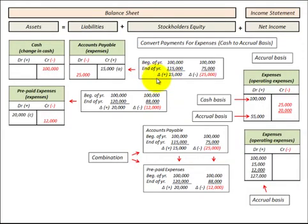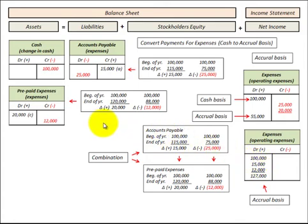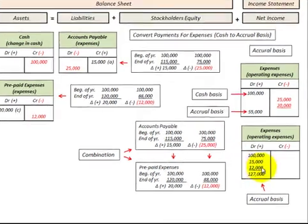In the example where we had a $15,000 increase in accounts payable, we credit accounts payable for $15,000 and the balancing entry is to debit our expenses for $15,000. Where we also had a $12,000 reduction in prepaid expenses, we credit prepaid expenses for $12,000 and the balancing entry is to debit our expense account for $12,000.